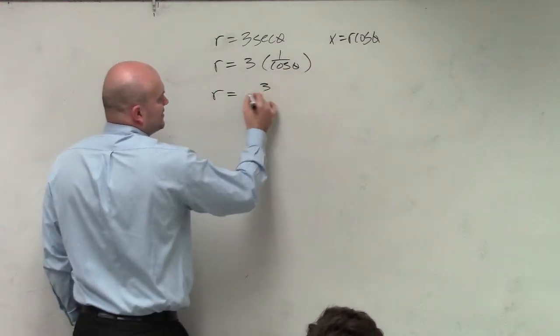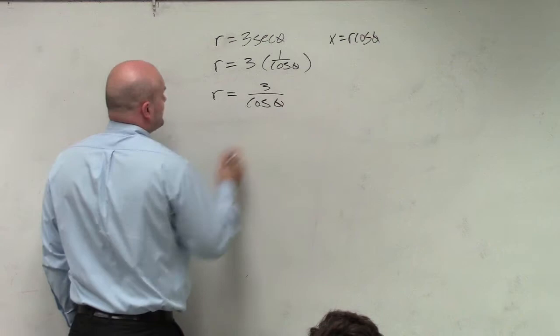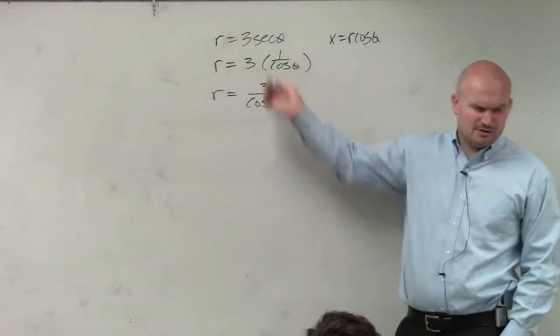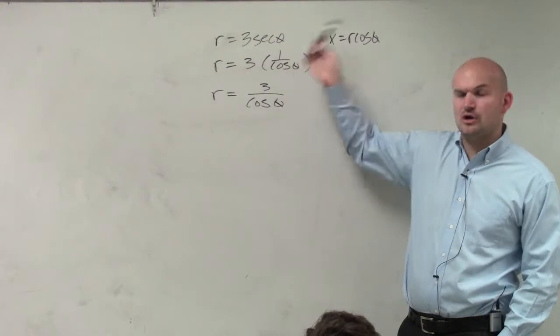So in reality, actually, you could even say it looks like this. R equals 3 divided by cosine of theta. It's really the same thing as this. You don't need to write this. I'm just showing you how those are all equivalent.